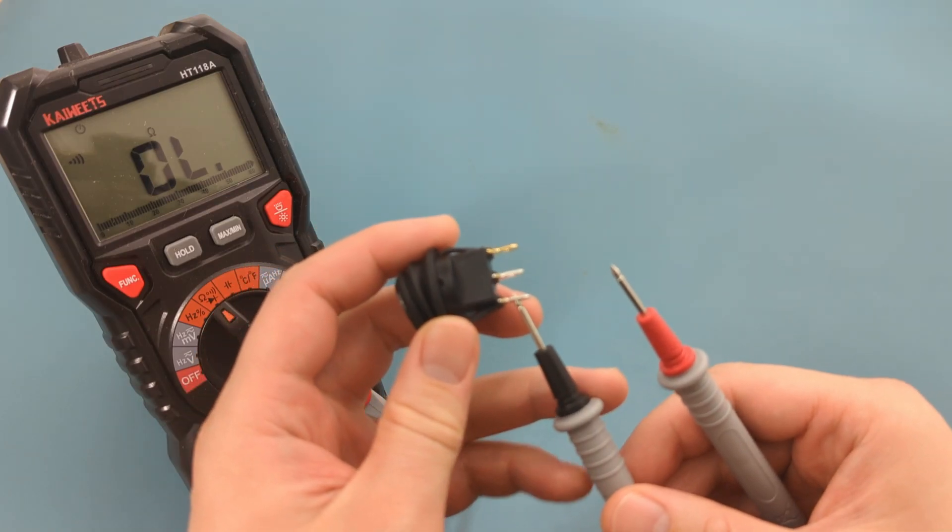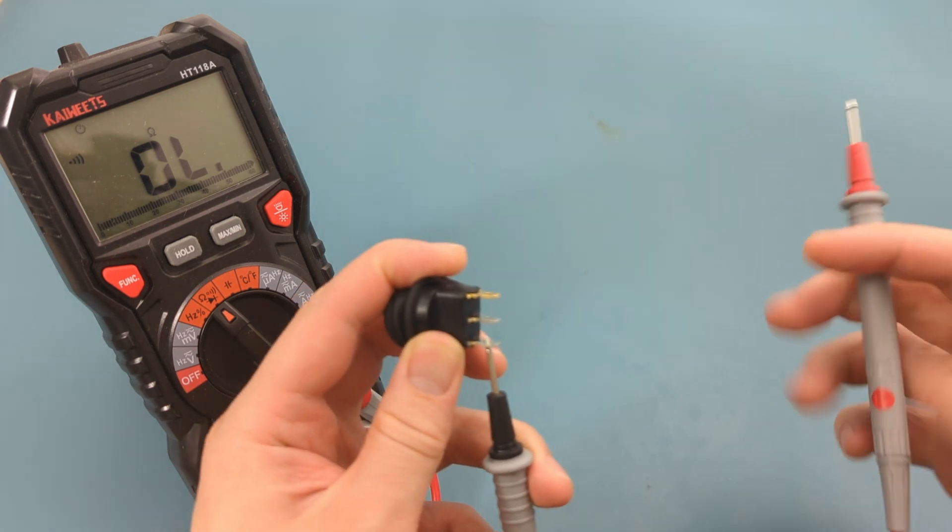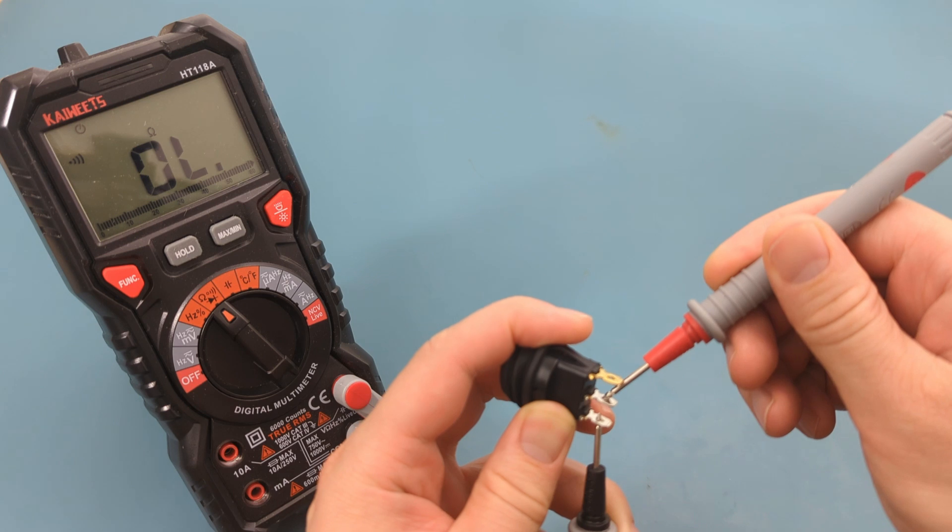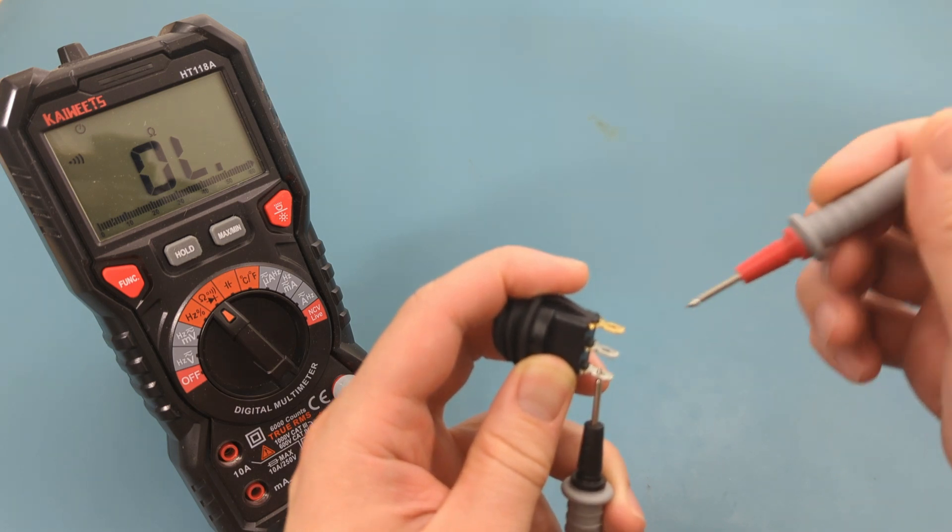Touch the black probe to the bottom pin. Touch the red probe to the middle pin. Although this isn't necessary when checking for continuity, it's always a good practice. Since the switch is off, you shouldn't hear a beep.